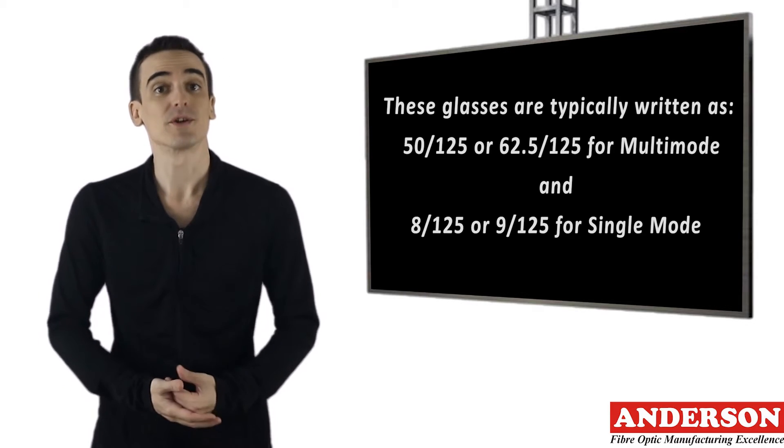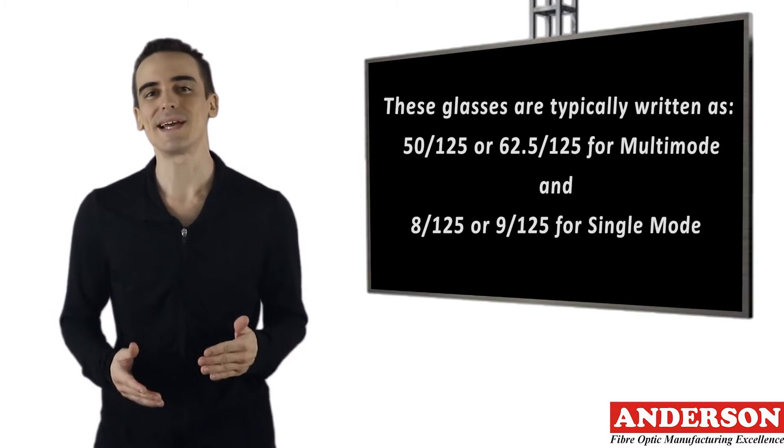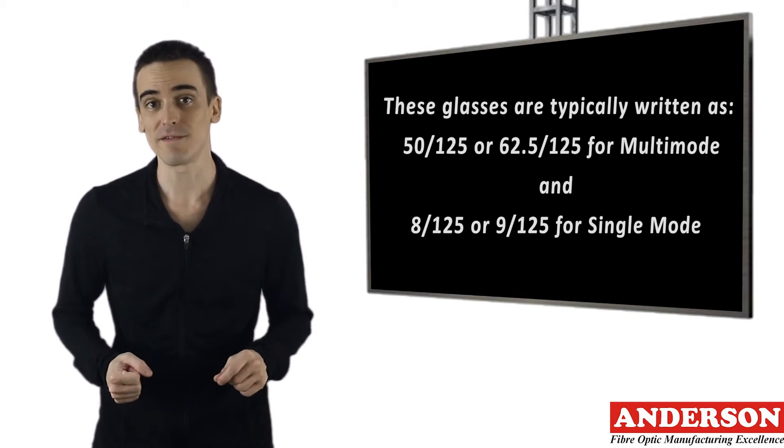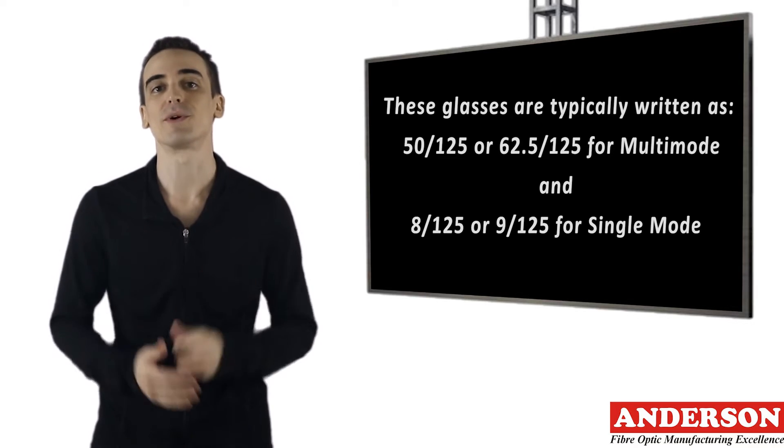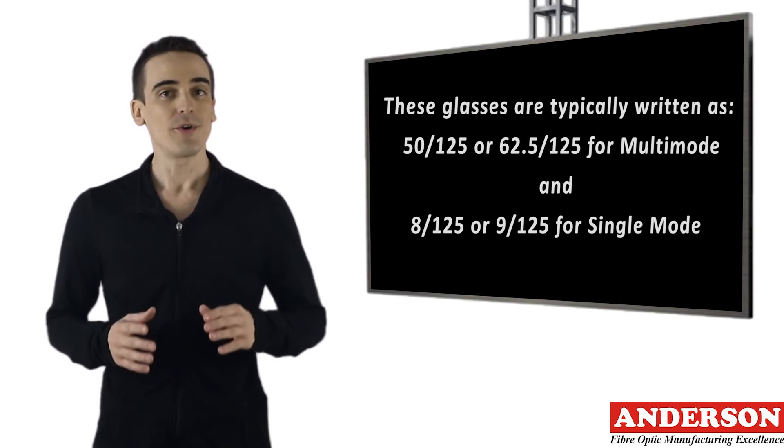Both of these measurements are in microns. As an example, when we state 50/125, the size of the core is 50 microns and the size of the cladding is 125 microns.